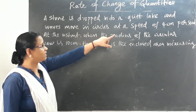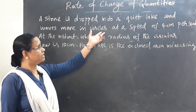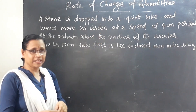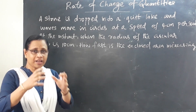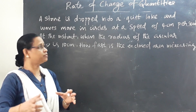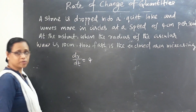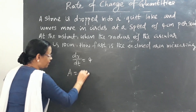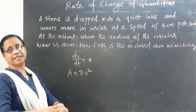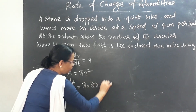A stone is dropped into a quiet lake and waves move in a circle at a speed of 4 cm per second. At the instant when the radius of the circular wave is 10 cm, how fast is the enclosed area increasing? The rate dr/dt = 4 cm/s. The area is A = πr², so dA/dt = π × 2r × dr/dt.